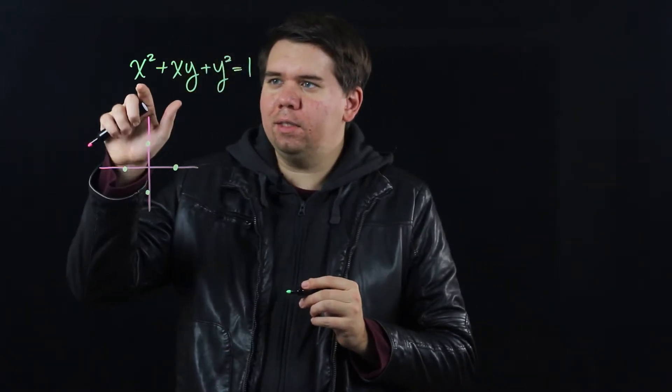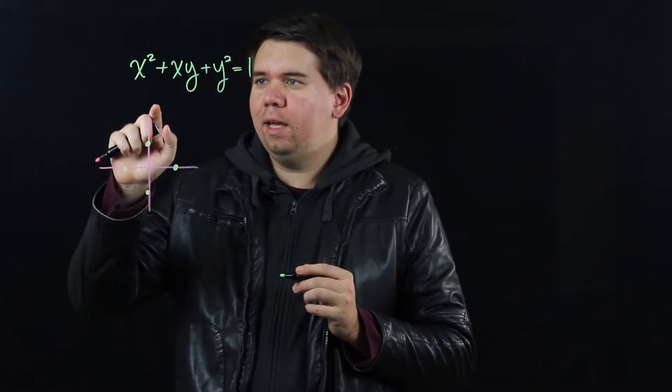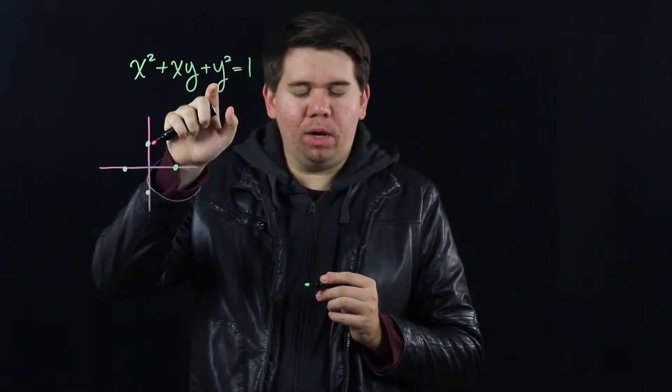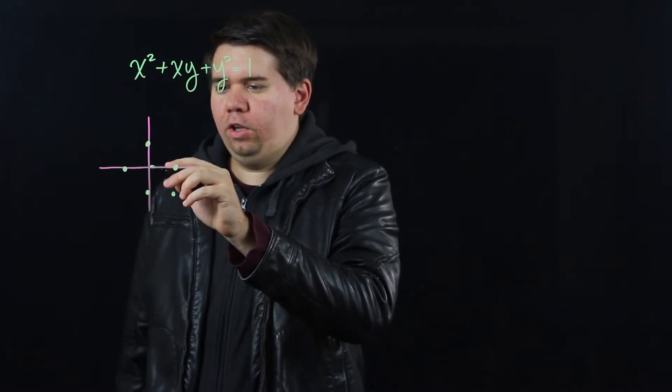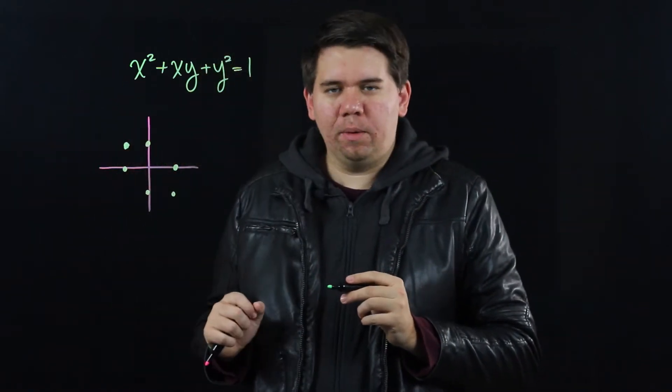For example, if x is positive 1 and y is negative 1, then you get 1 minus 1 plus 1, and that satisfies it as well. So you could have x being positive 1 and y being negative 1, or you could have your x being negative 1 and your y being positive 1. And both of those satisfy this as well.